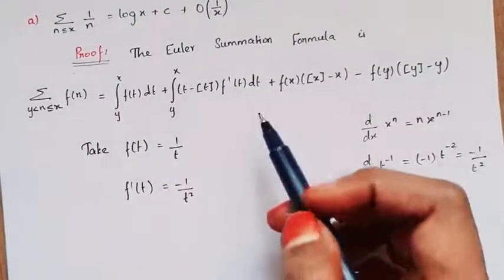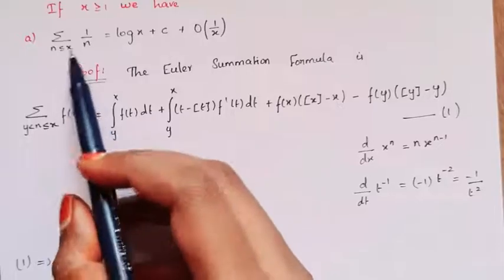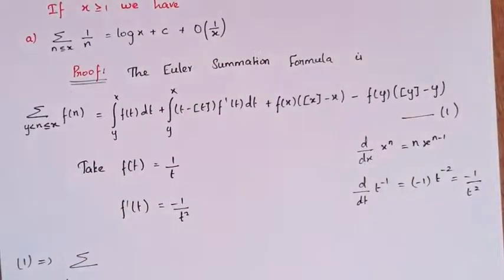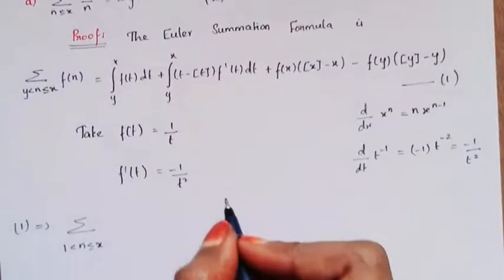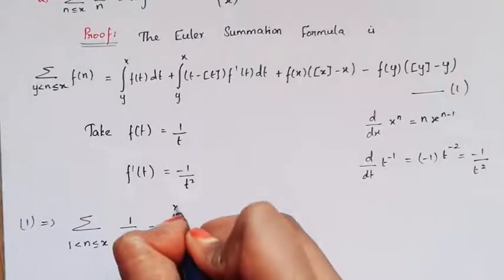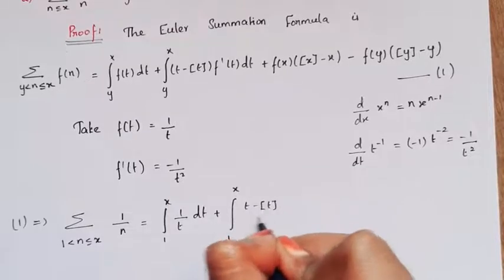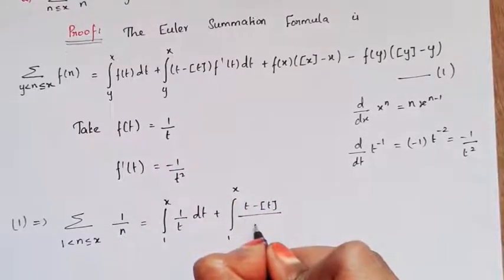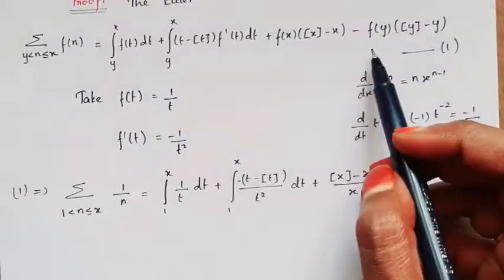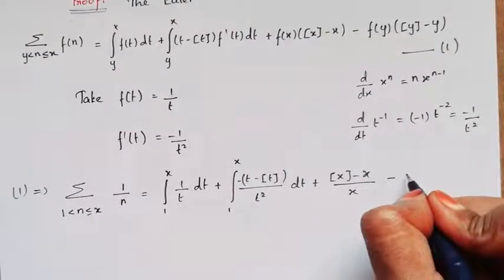Next, substitute these values into the Euler summation formula — mark this as equation 1. Given that x is greater than or equal to 1, our y is equal to 1. So I take the sum over 1 less than n less than or equal to x of f(n). Here f(t) equals 1 by t, so f(n) equals 1 by n. This equals the integral from 1 to x of 1 by t dt, plus the integral from 1 to x of (t minus floor(t)) times (minus 1 by t squared) dt, plus f(x) which is 1 by x times (floor(x) minus x), minus f(y) which is 1 by 1, that is 1.